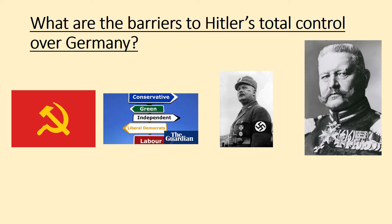Last lesson we looked at various things that Hitler has done to control Germany. Taking it back to Unit 3, there are still four main barriers to Hitler's total control. To set the scene, at this point in history — in our chronology — Hitler has just become Chancellor, and these are the four barriers that remain to him.